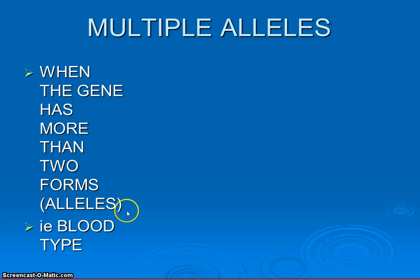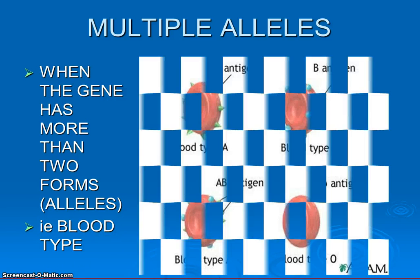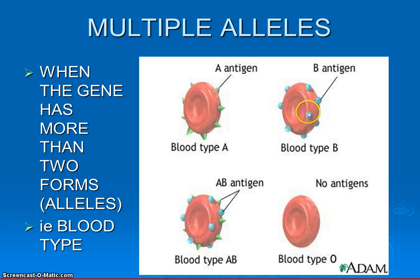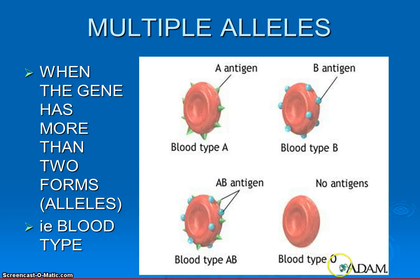It has more than two forms, more than two alleles, and the best example we can give is actually in us — in humans — our blood type. You can have different blood types based upon proteins that are made by the cell according to genes and instructions in the DNA. We can have an A protein and be blood type A, a B protein and be blood type B, if you have both on the surface you're blood type AB, and if you don't have A or B, you're designated blood type O.